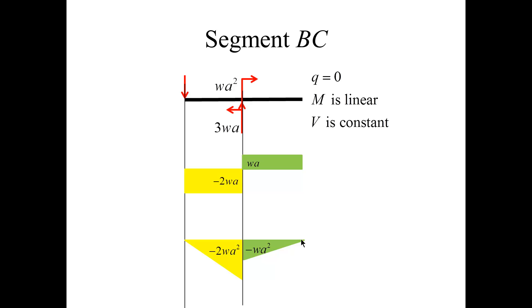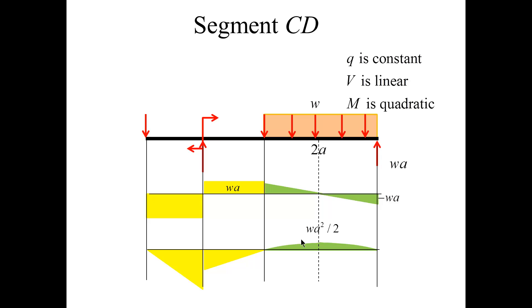Next, the last segment. So I start with Wa. There are no jumps at this point, there are no concentrated forces, so I start with Wa and I proceed with slope minus W for the length of 2a. The total loss is minus 2Wa, therefore I arrive at the force minus Wa.